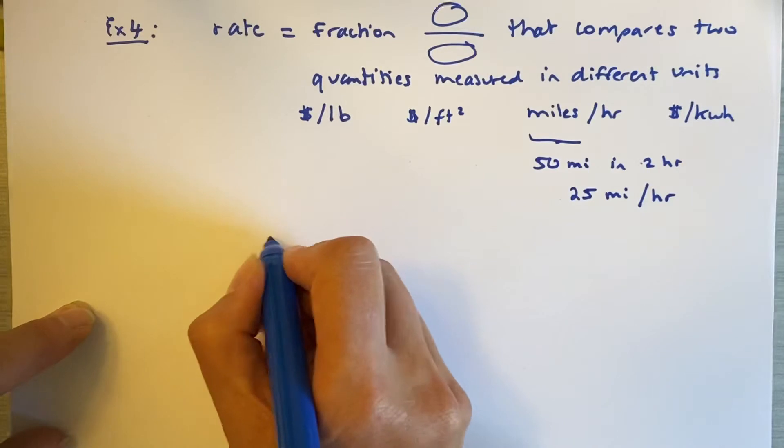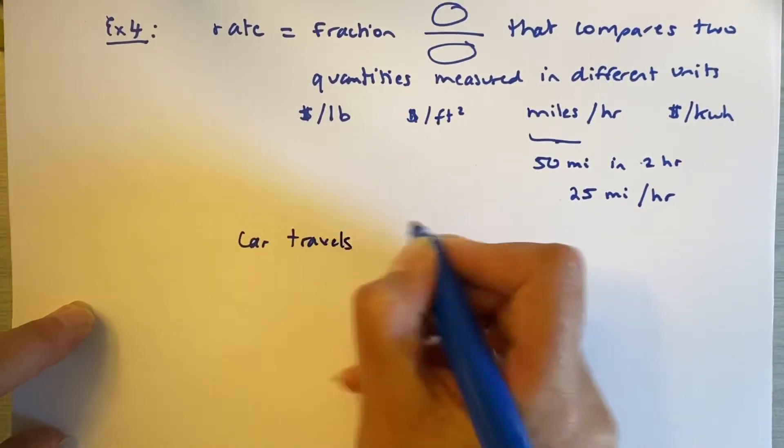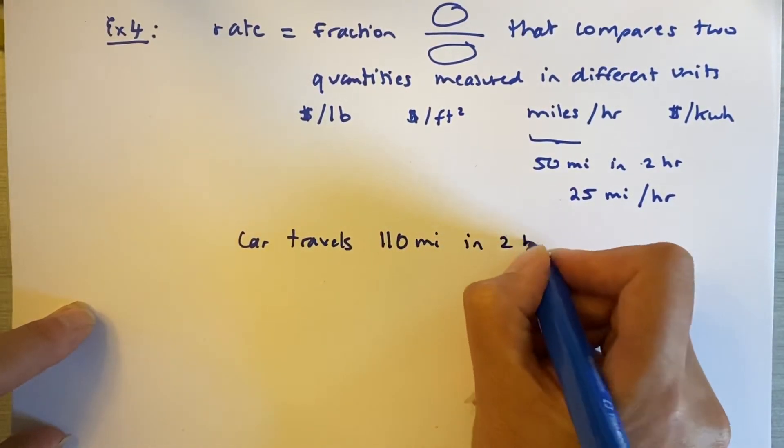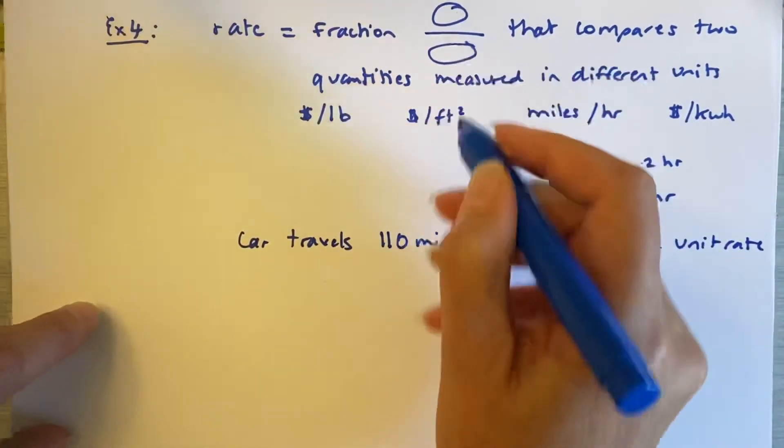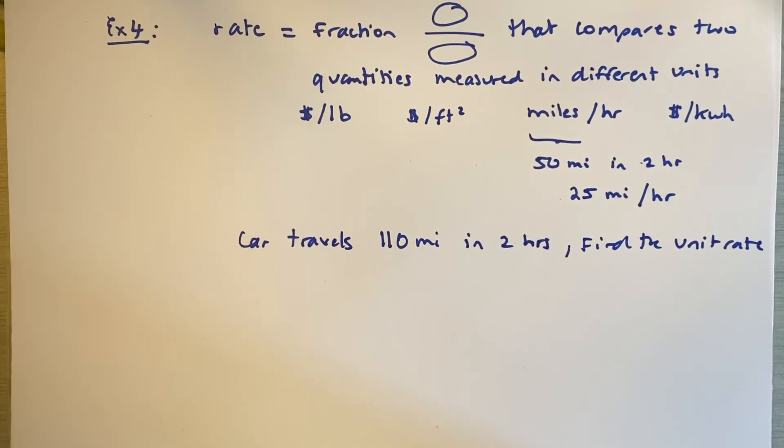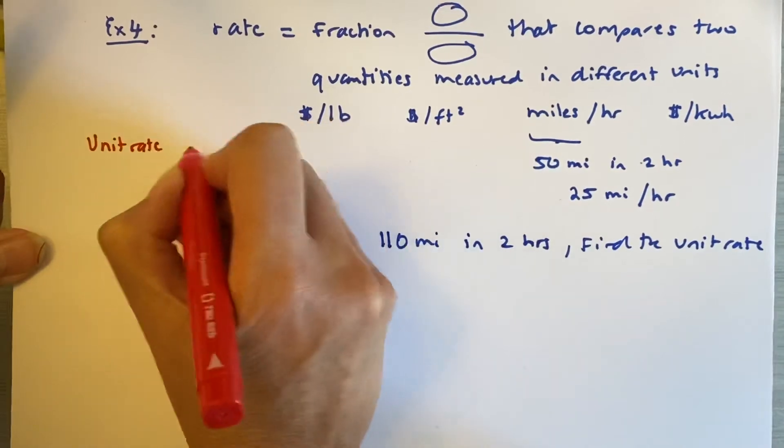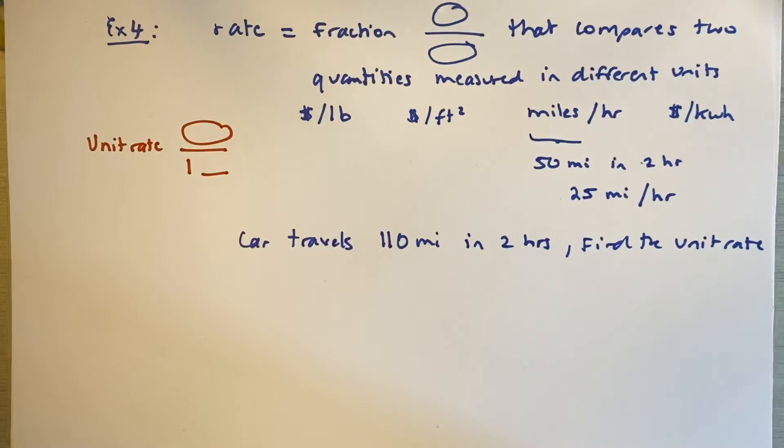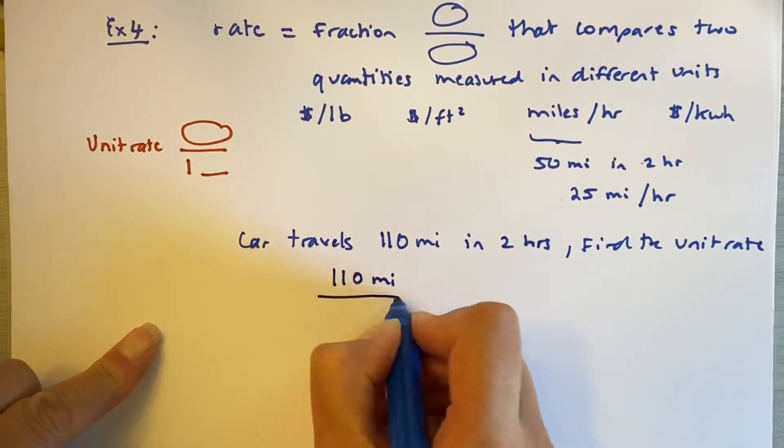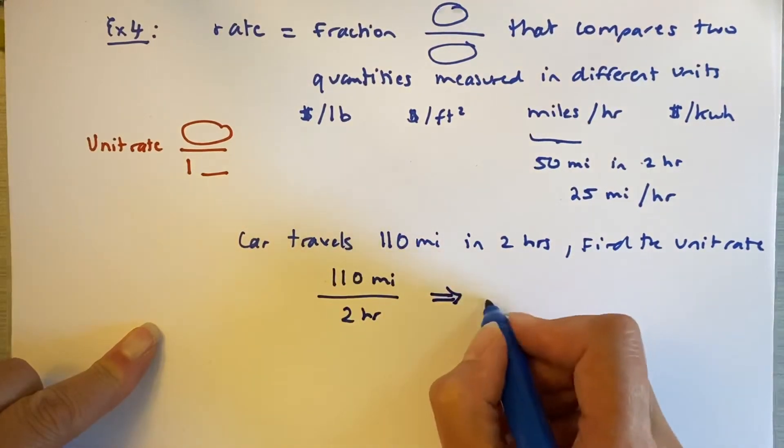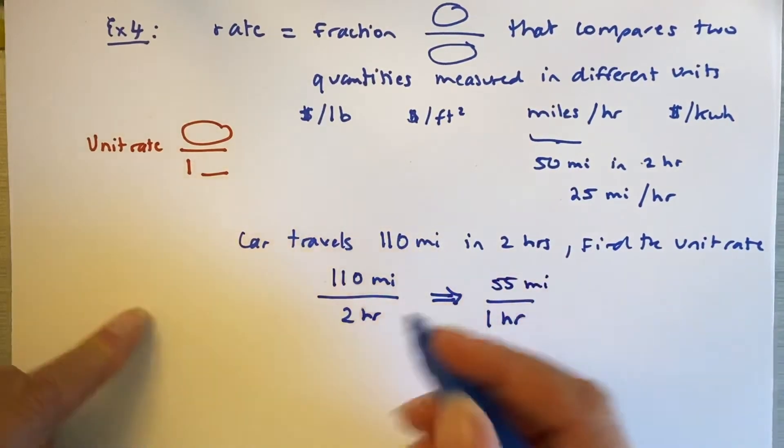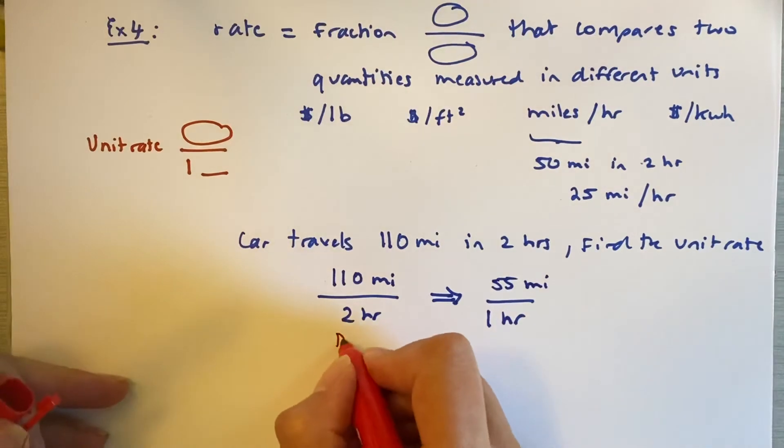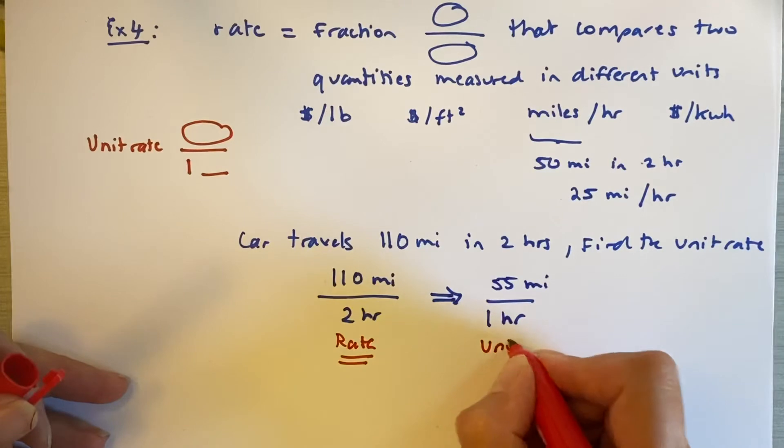So example four says, if a car travels 110 miles in two hours, find the unit rate. In other words, the rate where there's the number one something on the bottom. A unit rate is something per one of whatever the unit is on the bottom. So if a car travels 110 miles in two hours, how far does it travel in one hour? And we know that if it travels 110 miles in two hours, it's going to go 55 miles in one hour. So this is a rate. But this, because it's per one hour, is a unit rate.